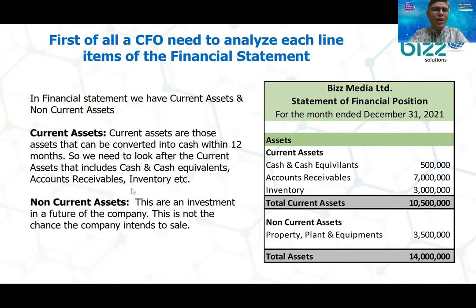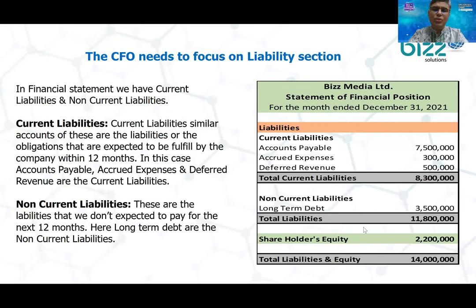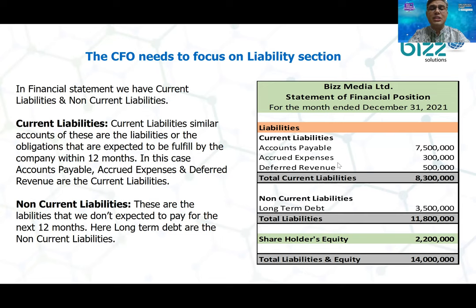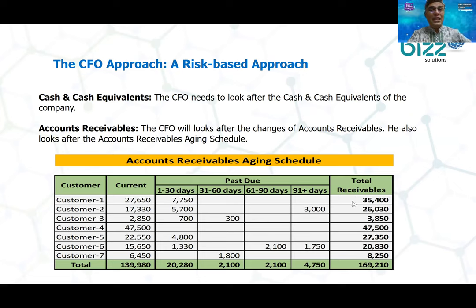The first category is fixed assets, which are non-current assets held for more than one year. Current assets are those within one year. Current liabilities include long-term debt classified as current. We also have accurate payable, accrued expenses, and deferred revenue as current liabilities. From a risk-based approach, accounts receivable aging analysis is a very important issue.